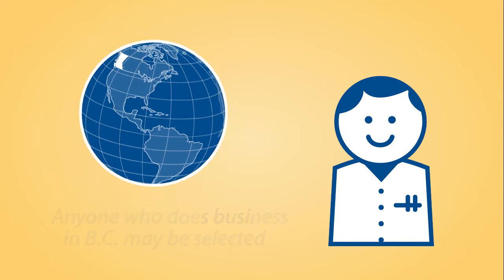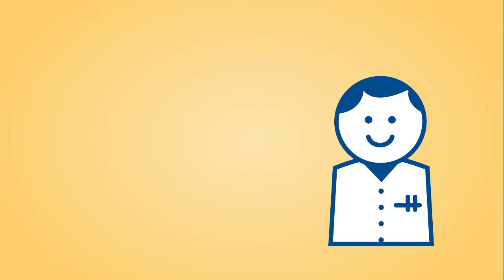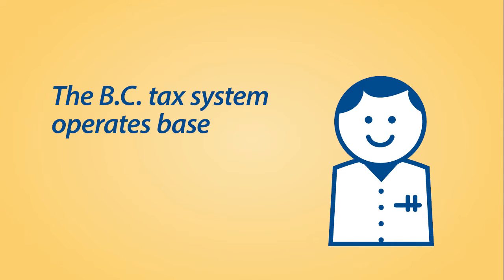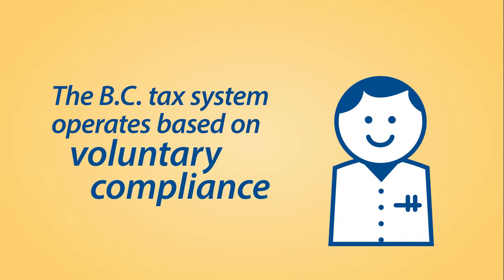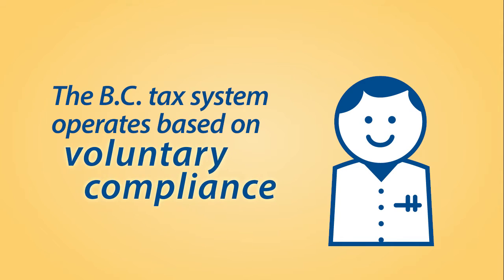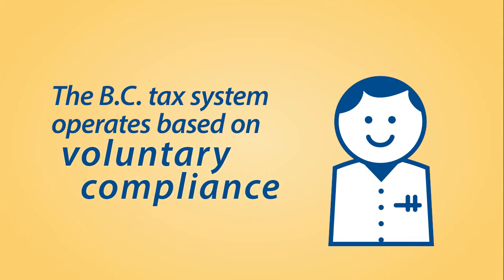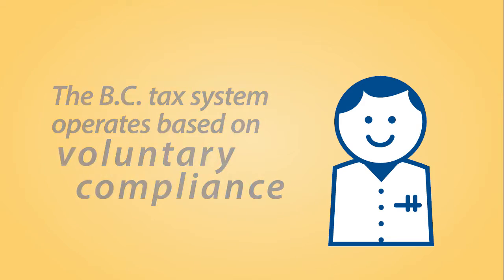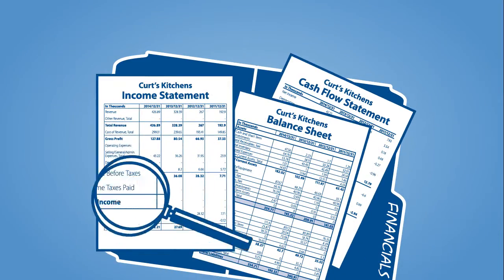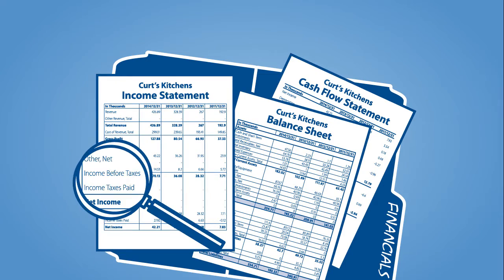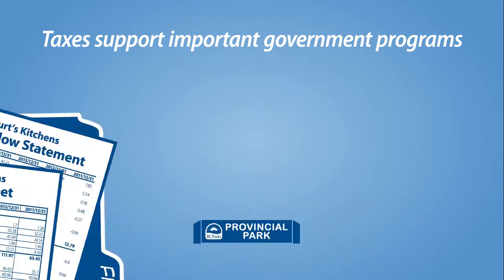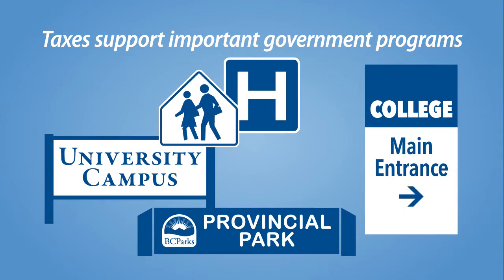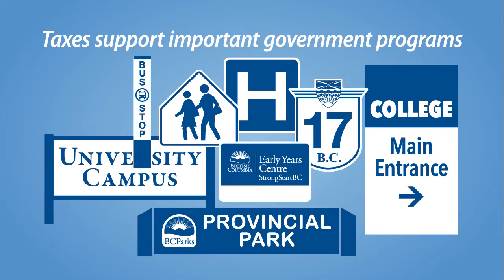Whatever the reason, the BC Tax System operates based on voluntary compliance. This means that every taxpayer is responsible for correctly paying taxes on their purchases and for charging, collecting and remitting tax on their sales. We do audits to identify and collect unpaid taxes that are used to support important government programs and services, such as healthcare, education, transportation and social services.